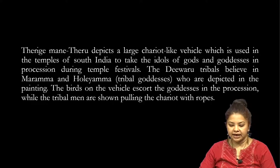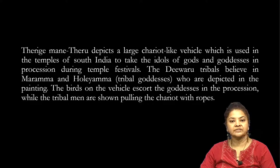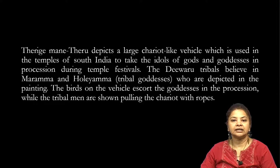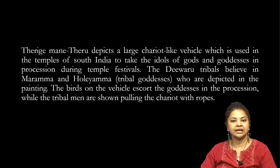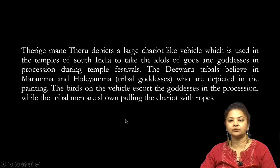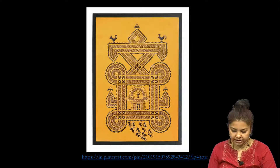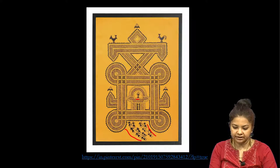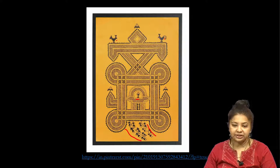Therike Mane Theru depicts a large chariot-like wheel which is used in the temples of south India to take the idols of gods and goddesses in procession during temple festivals. This kind of painting depicts the procession of the temples carrying the idol of gods and goddesses. The Devaru tribal community believes in Maramma and Holy Yama, tribal goddesses depicted in these paintings. The birds on the vehicle escort the goddesses in procession while the tribal men are shown pulling the chariot with ropes.